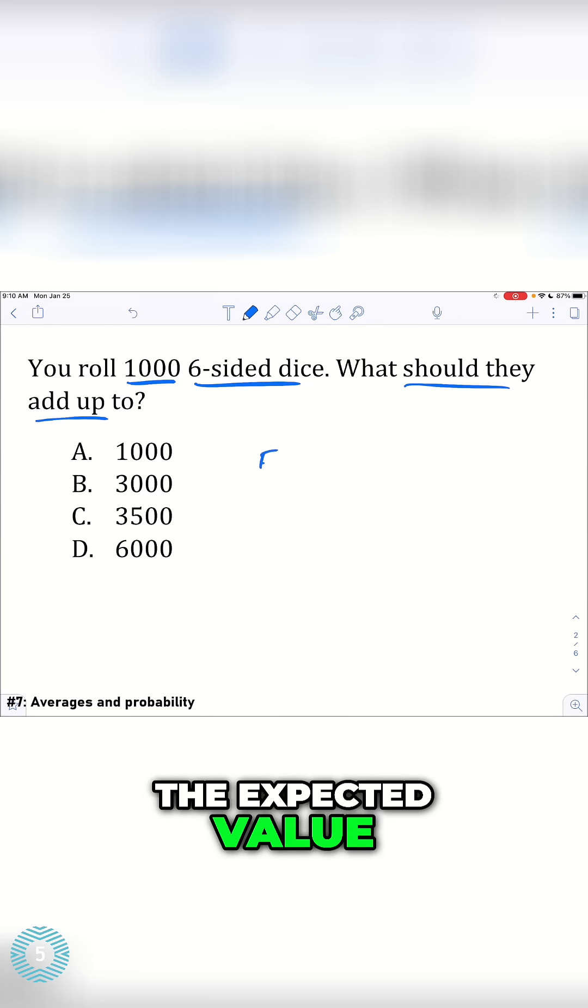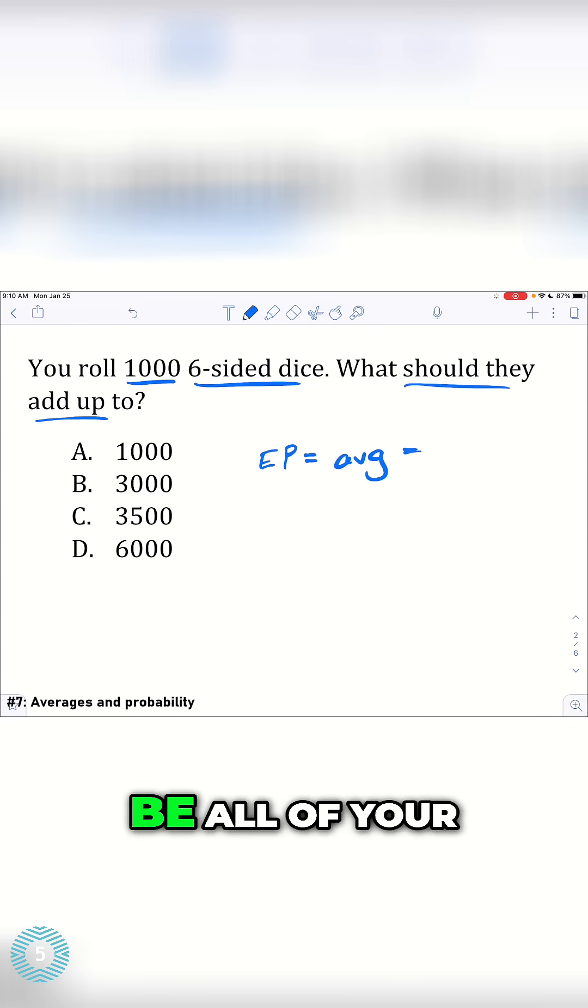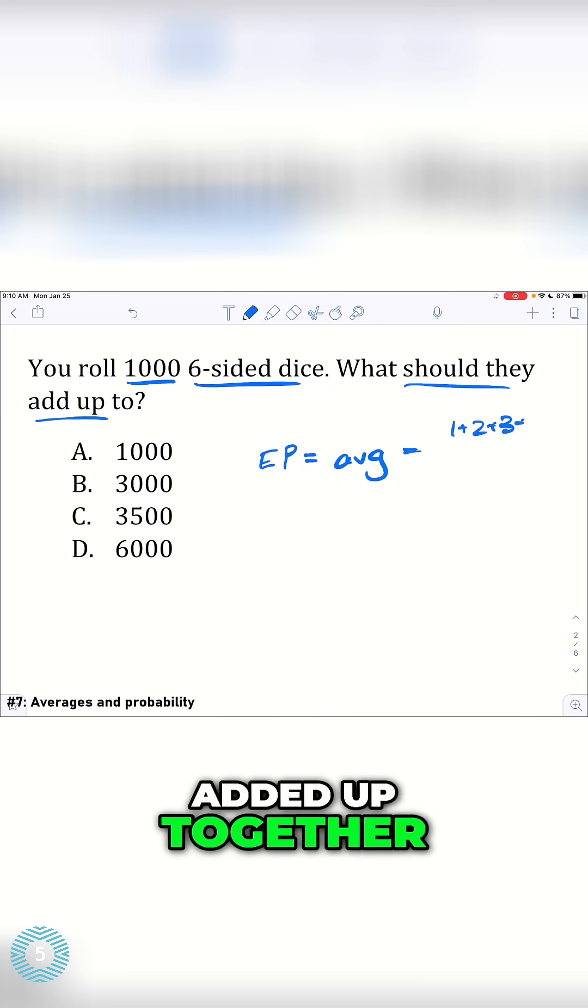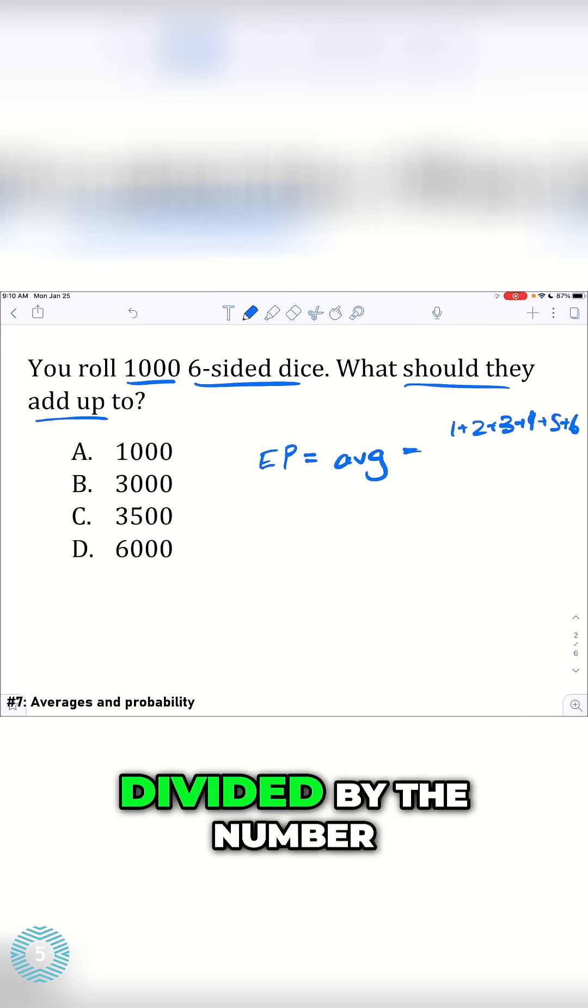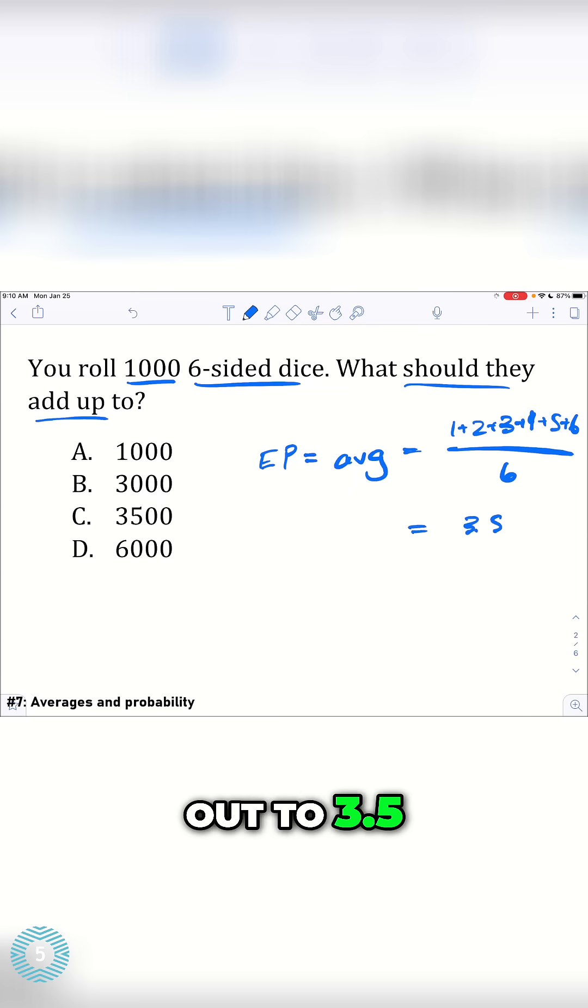The expected value, EP, is going to be just the average value of any given roll, which is going to be all of your possible rolls added up together, divided by the number of possibilities, and that just comes out to 3.5.